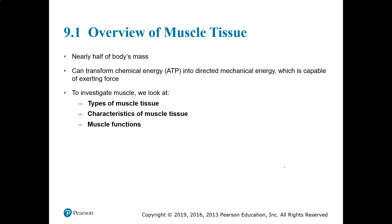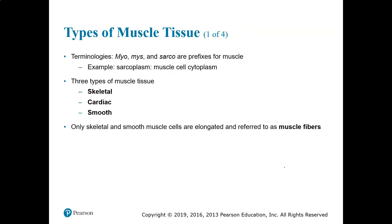When we study muscle, we look at types of muscle tissue, characteristics of muscle tissue, and muscle function. The prefixes myo, mys, and sarco are prefixes you will see in terminology for muscle. For example, the sarcoplasm is muscle cell cytoplasm — instead of calling it cytoplasm, we call it sarcoplasm.